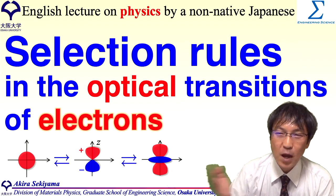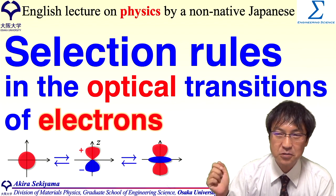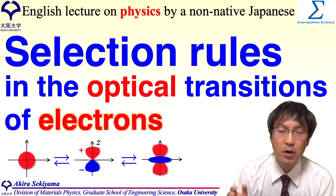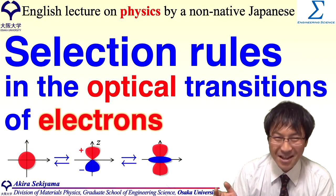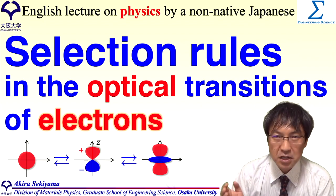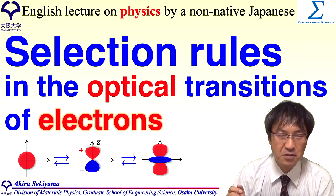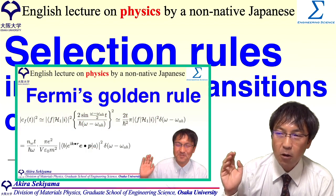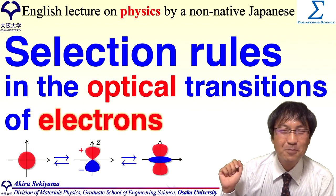In this movie, I would like to show the selection rule in the optical process of transition of the electron originally bound to the nucleus of atom or ion. Not only the rule for the linearly polarized photons, but also those for unpolarized and circularly polarized photons are explained. Further, the higher-order transitions such as electric quadrupole and magnetic dipole ones are briefly touched in addition to the electric dipole transitions. I hope that the audience has already learned Fermi's Golden Rule for the optical transition in the movie titled as Fermi's Golden Rule as shown here. Please enjoy this movie.